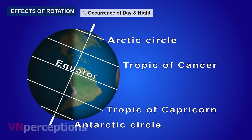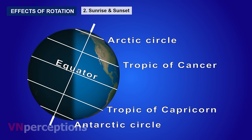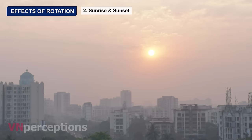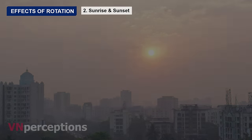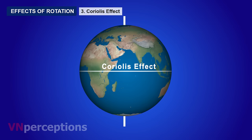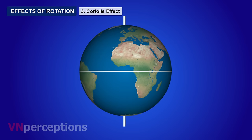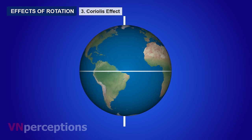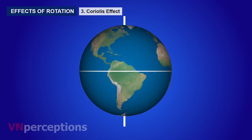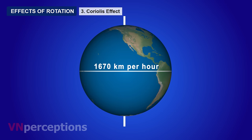Another effect is sunrise and sunset, which happens because of rotation of the earth. Then there is the Coriolis effect. We know the earth is spinning at a great speed — at the equator it is 1670 kilometers per hour.